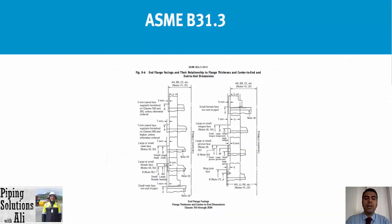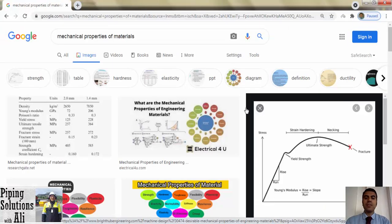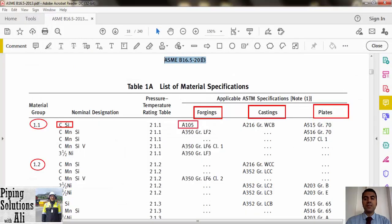Each flange type could be manufactured with three different faces: one — flat face; two — raised face; three — ring type joint. You can find dimensions of those faces in Figure 6 (flange facings and their relationship to flange thickness) and center-to-end and end-to-end dimensions of ASME B16.5. Referring to the specified standard facilitates the pressure design of the flange. By pressure design I mean determining the class rating of the flange.